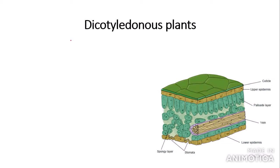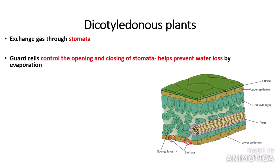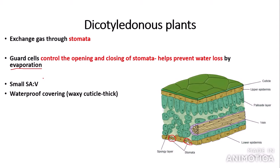Now we need to know about the adaptations of plants to gas exchange. Plants exchange gas through pores called stomata. Special cells called guard cells control the opening and closing of stomata — they close at night and open during the day. This helps prevent water loss by evaporation, because if water were lost from the plant then less photosynthesis would occur. Leaves also have a small surface area to volume ratio, reducing water loss by evaporation. Plants also have a waterproof waxy cuticle which is thick, also helping prevent water loss.